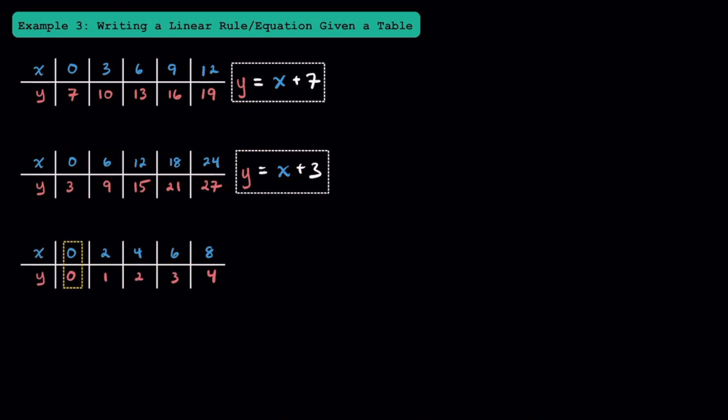Now let's try this one. These pairs of numbers are interesting because they're both 0, so let's look at another pair. It looks like in this case the y value is smaller than the x value. To get from 2 to 1, maybe we subtract by 1. However, that can't be true because 4 minus 1 doesn't equal 2. To get smaller, we could also potentially use division. By dividing by 2 or cutting it in half, we do get 1. This also works for 4: dividing 4 by 2 gives 2.